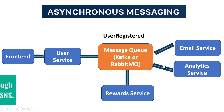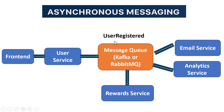Here's a practical use case. Let's say a user signs up for your platform. The front end calls the user service, which stores their information in the database. Now you want to send them a welcome email, but that doesn't need to happen right away. So instead of calling the email service directly, the user service publishes a message: user registered. The email service is subscribed to that event — it listens for the user registered message and when it sees one, it sends the email. Maybe the analytics service is also listening and logs the signup data. Maybe a reward service gives the user some bonus credits. None of these services talk to each other directly. They are all reacting independently to the same event. That's asynchronous messaging in action.